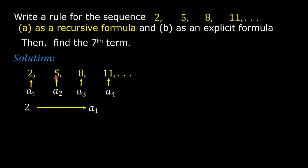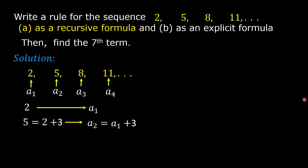Notice that 5 equals 2 plus 3. But 5 is equals to a sub 2, so we can replace 5 by a sub 2. And 2 is a sub 1, so we can replace 2 by a sub 1. So, a sub 2 is equal to a sub 1 plus 3.